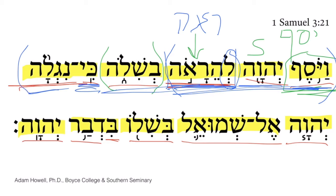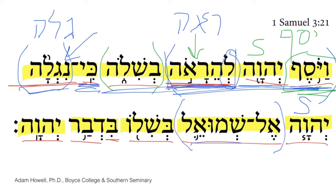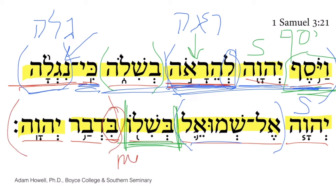The verbal element is a Nifal perfect 3MS of galah, meaning 'to uncover' or 'to reveal.' The Lord is the subject, and the passive-reflexive nuance of the Nifal makes sense: 'the Lord revealed Himself.' The prepositional phrase tells us to whom — namely to Samuel — and again we get the prepositional phrase limiting where the vision took place, at Shiloh. The final prepositional phrase begins with the bet of means or instrument: 'by the word of the Lord,' indicating how the Lord revealed Himself to Samuel.